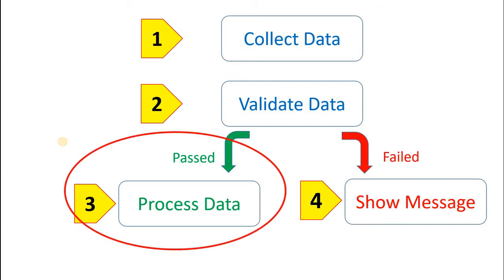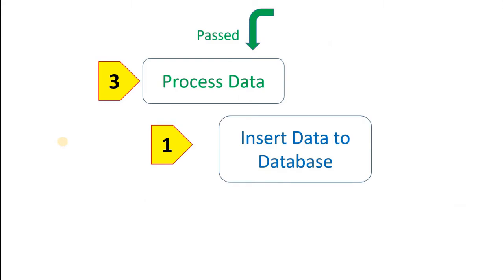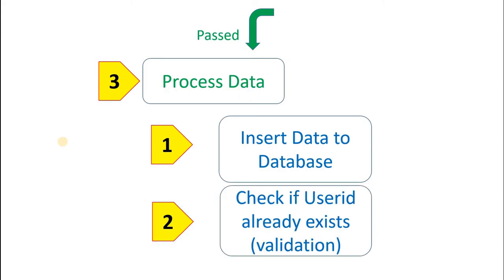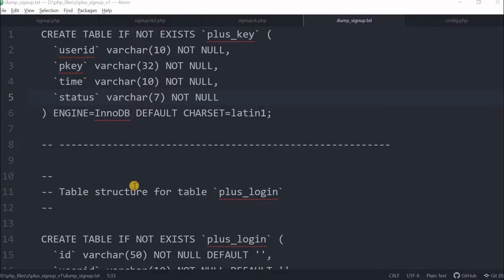Now during this process of data, we will first insert it to the MySQL database — whatever the user has entered — and then we will add one more validation telling the user that the user ID is already taken, so they should select one more. Let's code that now and create the database first.